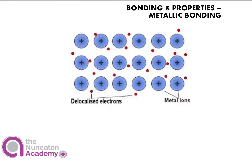Metallic bonding is a little bit different to that, because metallic bonding is between metals — between metal atoms. And metals can't give electrons to other neighbouring metals, as they're all trying to lose some to try and get a full outer shell.